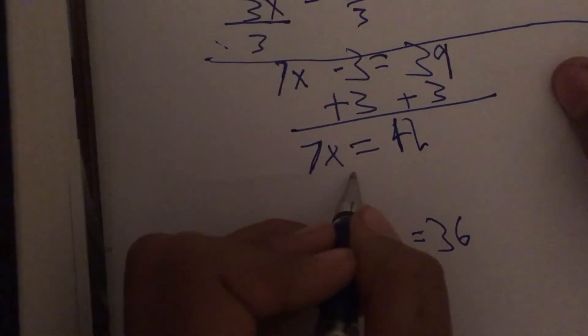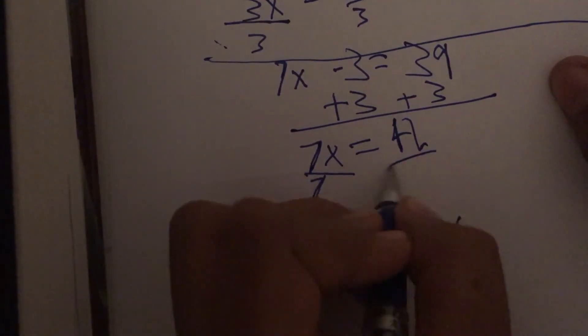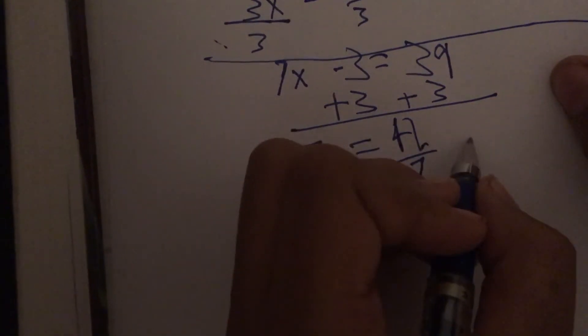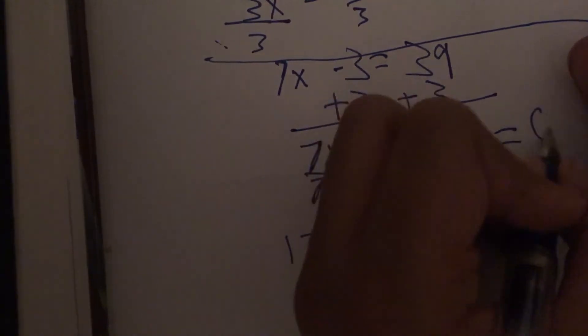All we have to do now is divide both sides by 7, and that means x is equal to 6.